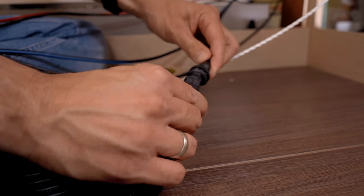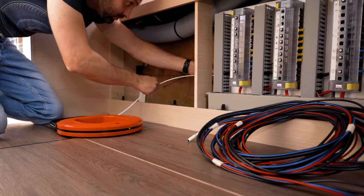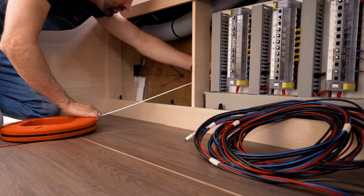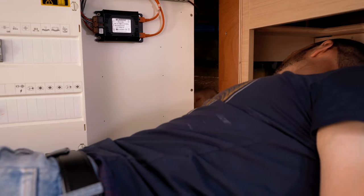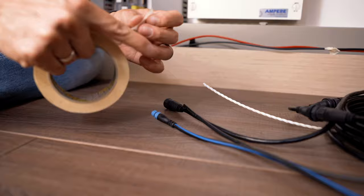The data cables and the VHF antenna cable should run behind the switch cabinet. To do this, we again use our routing aid and connect it to the data and antenna cables and then carefully pull them back.